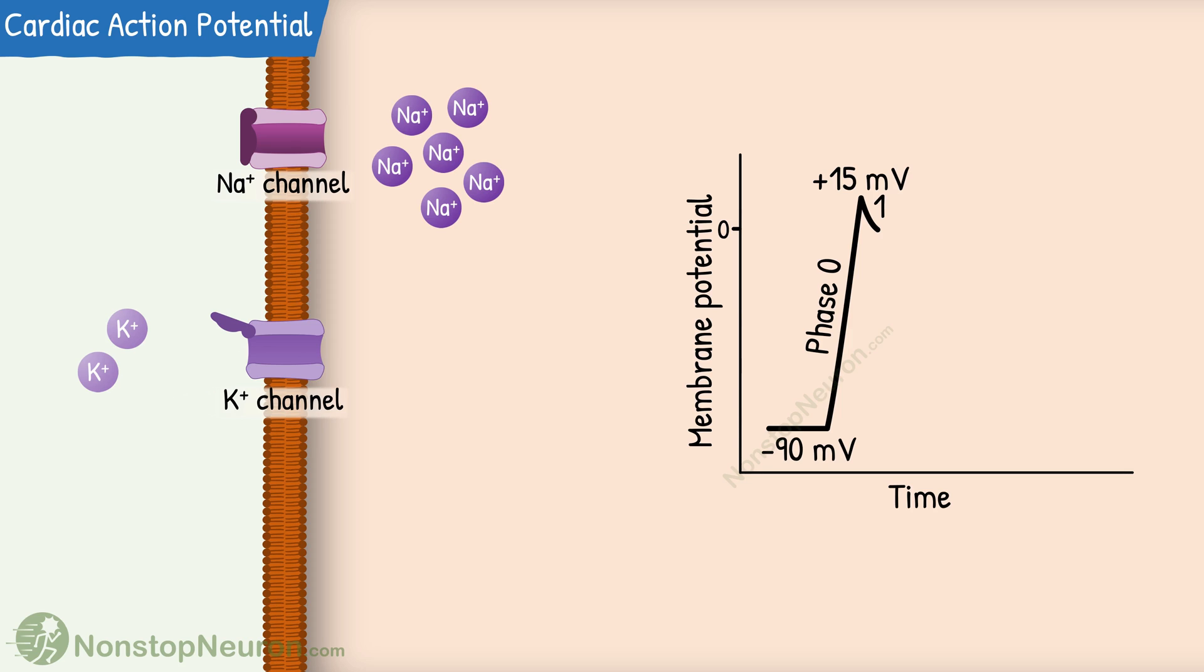Now comes the interesting part. Soon after the onset of the action potential, fast potassium channels close, so the efflux of potassium ions stops. And cardiac muscles have L type of calcium channels. L means long-lasting, but I like to call them lazy channels. Yes, they are lazy because they are slow to open and slow to close.